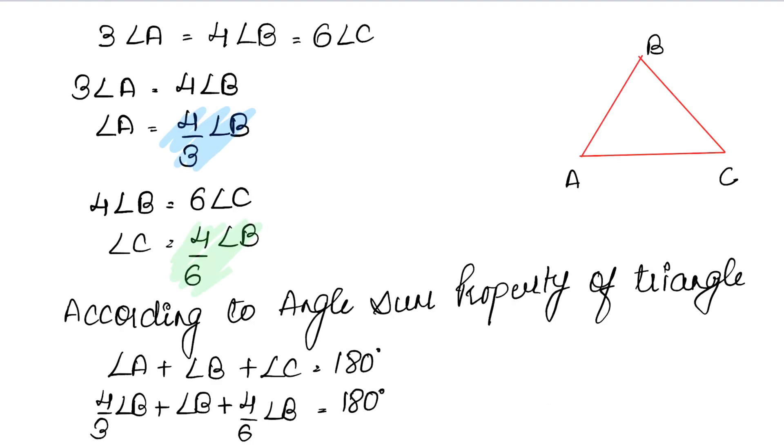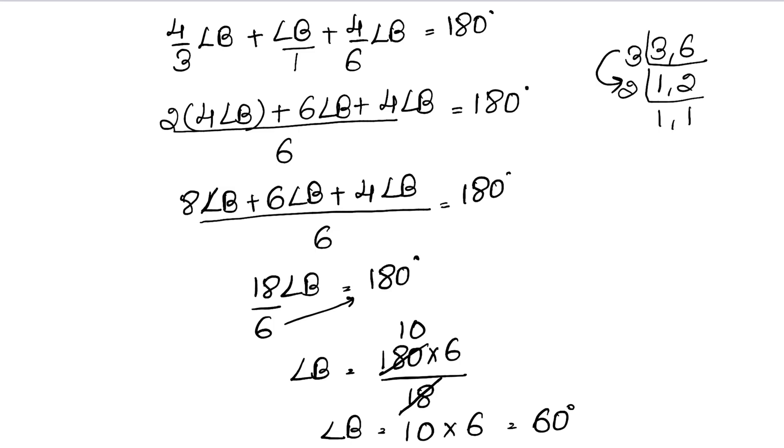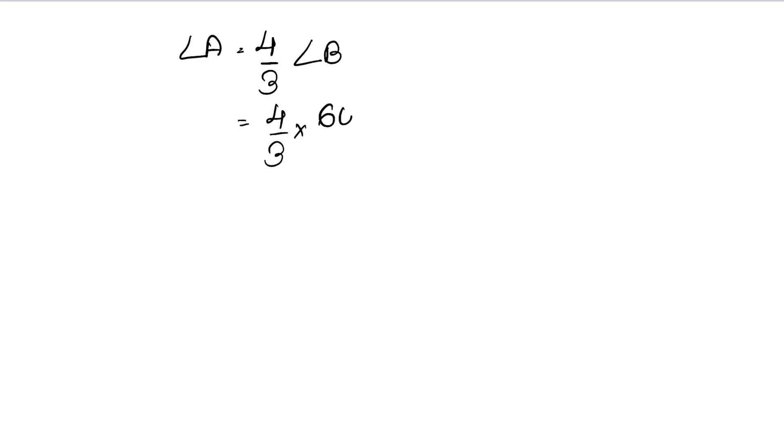Now how will angle A be? Angle A value, how much is it? 4 upon 3 of angle B. So 4 upon 3 of angle B, and how much is our angle B? It will be multiplied because it was 60 degree. So 3 ones are 3, 3 twos are 6 and 0. So how much is it? 4 into 20, that is 4 twos are 8, 80 degree.